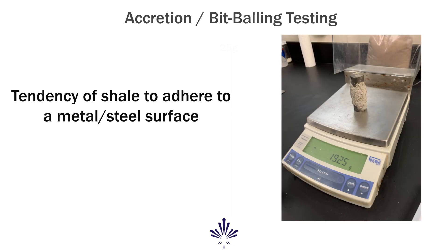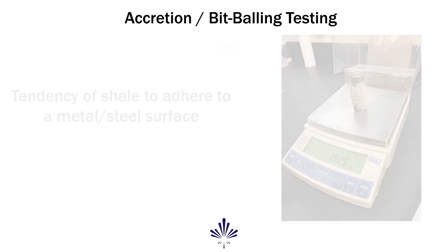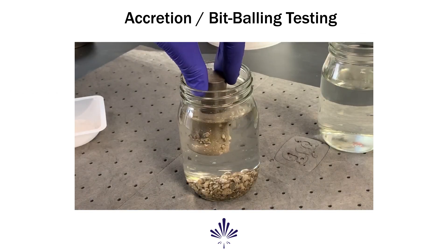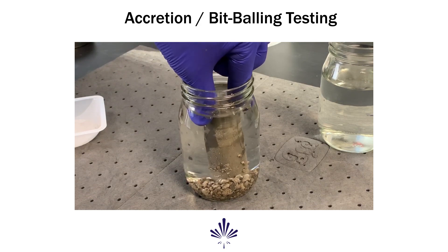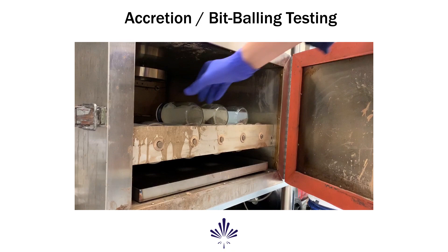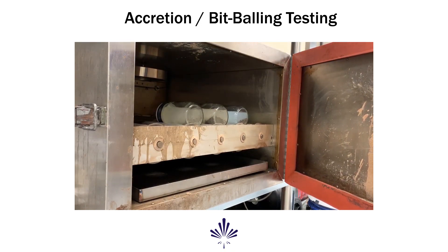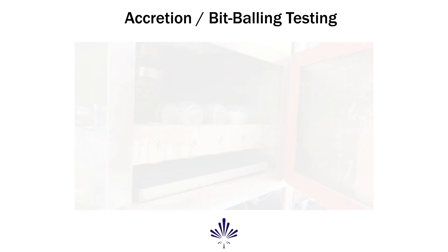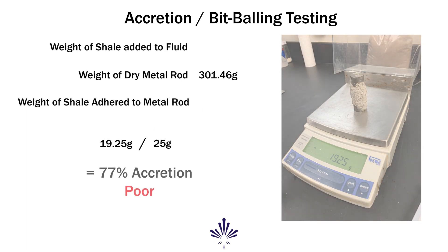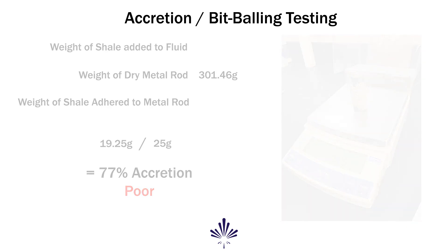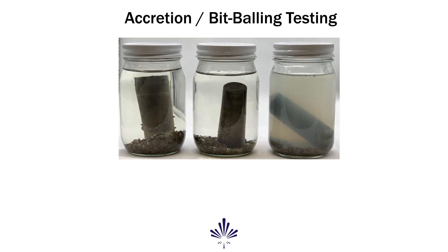Known as accretion or bitballing testing, this procedure measures the tendency of a shale to adhere to a steel surface, providing an indicator of the potential for bitballing while drilling. A cylindrical metal sleeve is hot rolled in a fluid for a set time interval. The metal sleeve is then weighed after the hot roll period, where shale may be adhered to the sleeve, resulting in a quantifiable way of understanding its affinity for metal surfaces. This test can be used in part to identify the effectiveness of certain inhibitors, sometimes referred to as anti-bitballing additives.